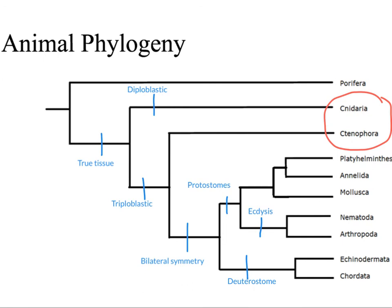From this tree, we can see how many of these animal body plan characteristics, which are morphological, have been supported by DNA data and actually lead to this hypothesis of evolutionary history.